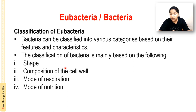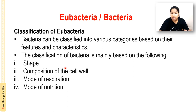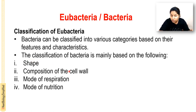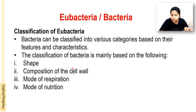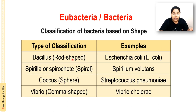The classification of eubacteria is based mainly on four features: shape, composition of the cell wall, mode of respiration, and mode of nutrition. Based on shape they are classified as cocci (spherical), bacillus (rod-shaped), spiral (corkscrew-shaped), and vibrio (comma-shaped). Examples: Escherichia coli and Bacillus anthracis are bacilli; Treponema pallidum is a spirochete; Streptococcus and Staphylococcus are cocci; Vibrio cholerae is a vibrio.